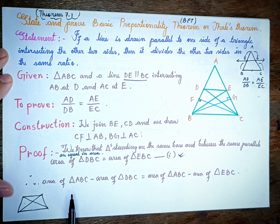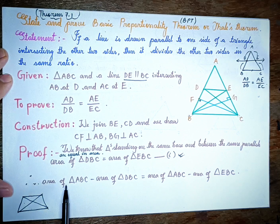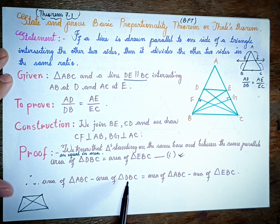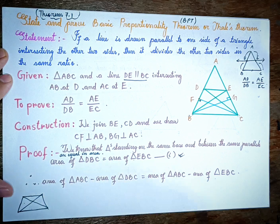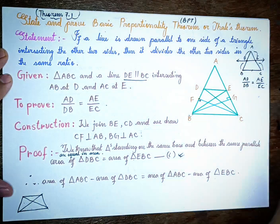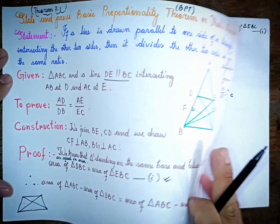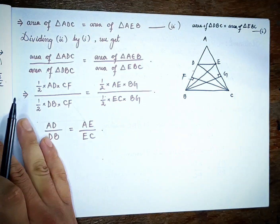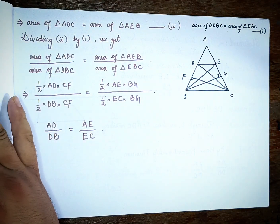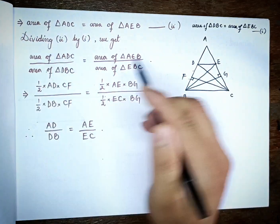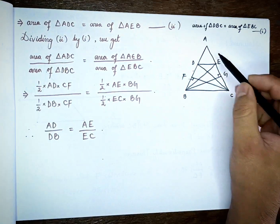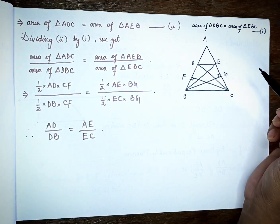So we find that area of triangle DBC equals area of triangle EBC, because triangles DBC and EBC are on the same base BC and between the same parallels DE and BC.